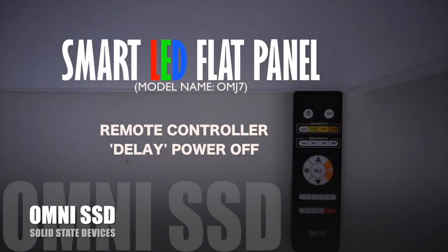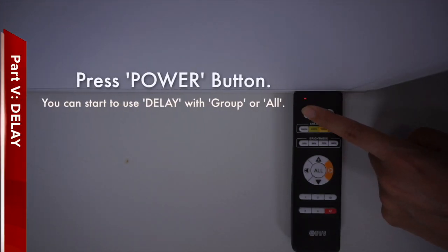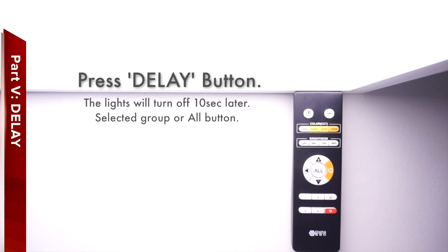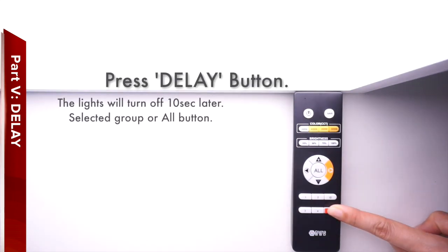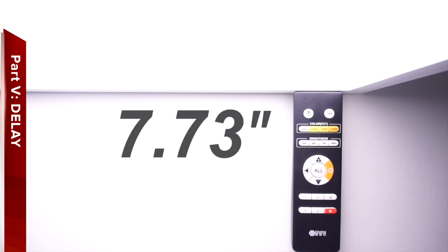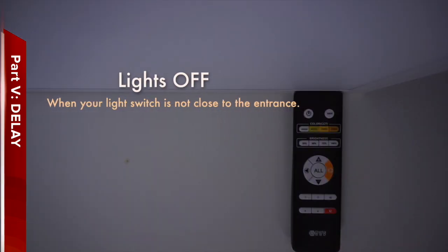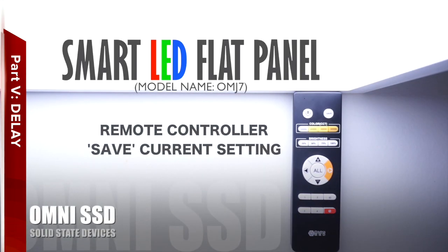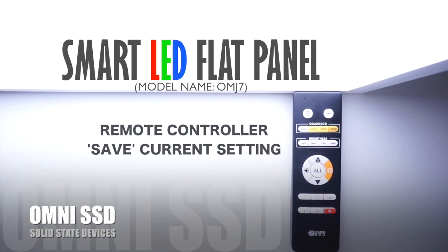Smart LED Flat Panel Model OMJ7 — the remote controller delay power off. Press the power button and you can start to use the delay with the group or the all button. The lights will turn off approximately 10 seconds later. Select the group button. The timer button is the red button in the bottom right hand corner. You can utilize the off button on your remote control, especially when your light switch is not close to the entrance. The remote controller has a save button in the upper right hand corner, which will save all functions that you set.